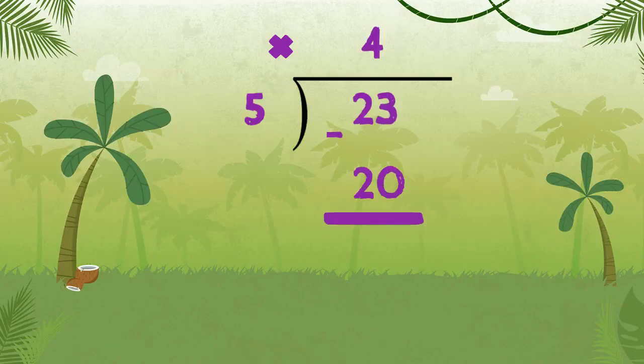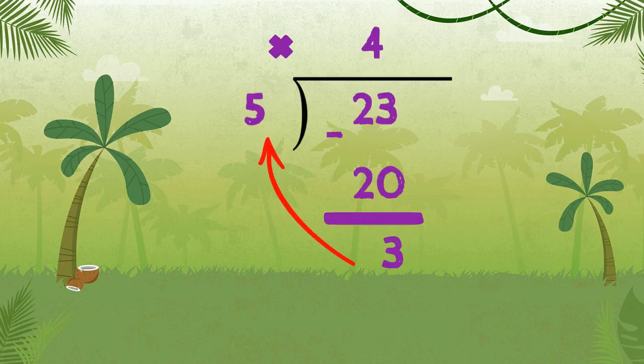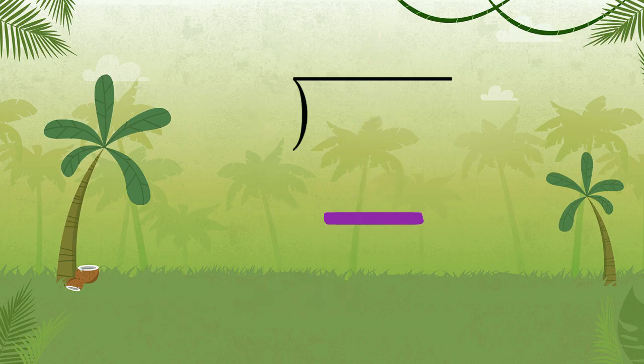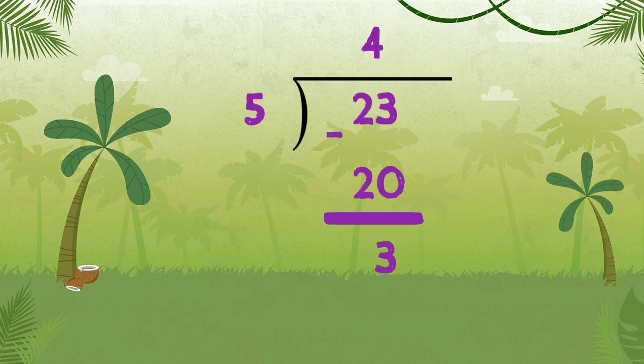Now we subtract those numbers to see what our remainder is. 23 minus 20 equals 3. That looks like a good answer because 3 is smaller than 5, which is the divisor, so it is a reasonable remainder. Our answer for 23 divided by 5 is 4 with a remainder of 3, and that's how we write it.